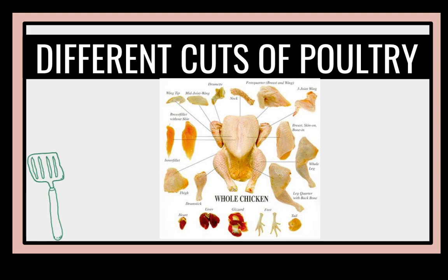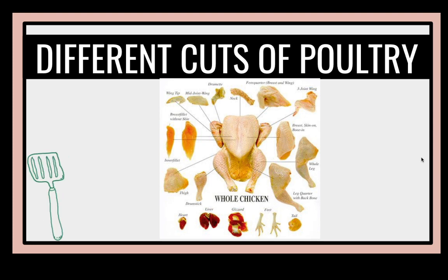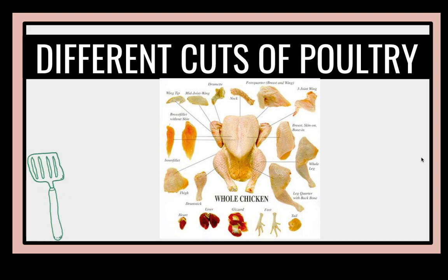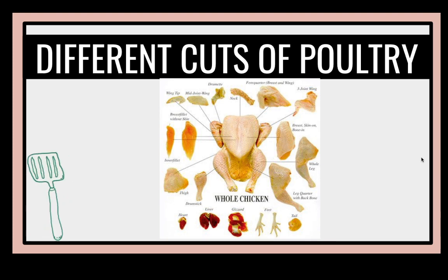If we're going to dissect it from a different perspective, we have the neck, forequarter breast wing, j-joint wing, breast skin on bone, hood leg, leg quarter with backbone, the tail, feet which are very rich in collagen, the gizzard, liver, drumstick, heart, thigh, the fillet, lower fillet, breast fillet, wingtip, mid-joint wing, and drumettes.